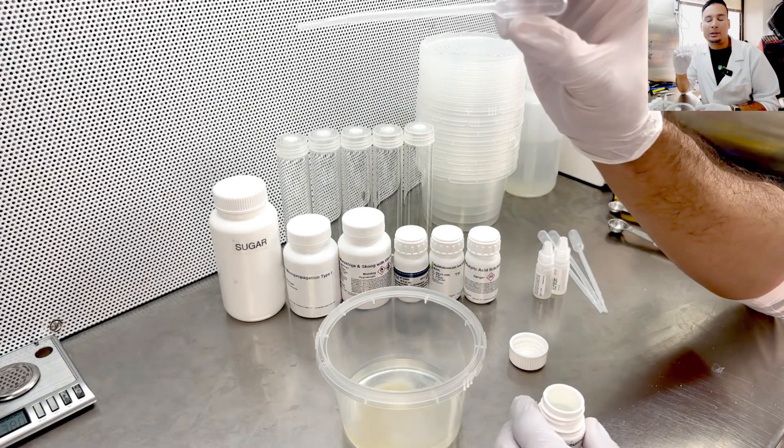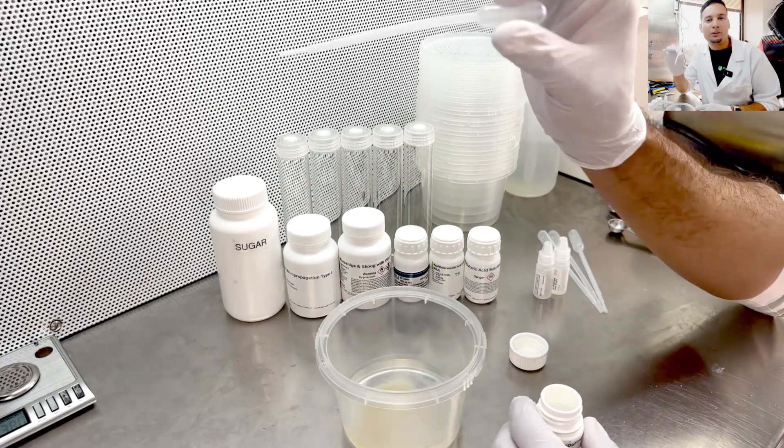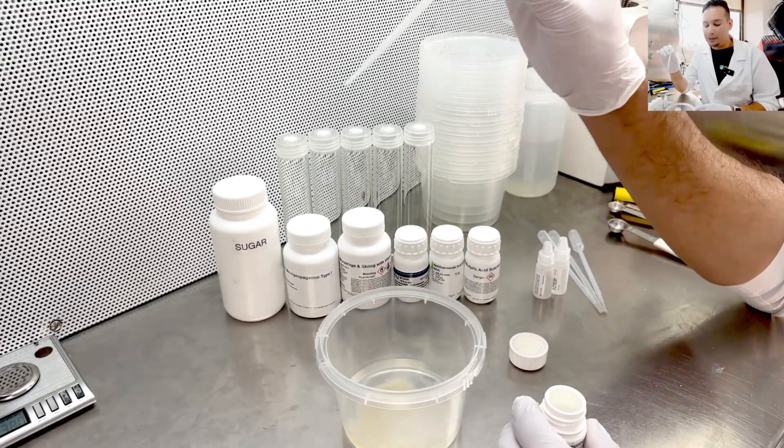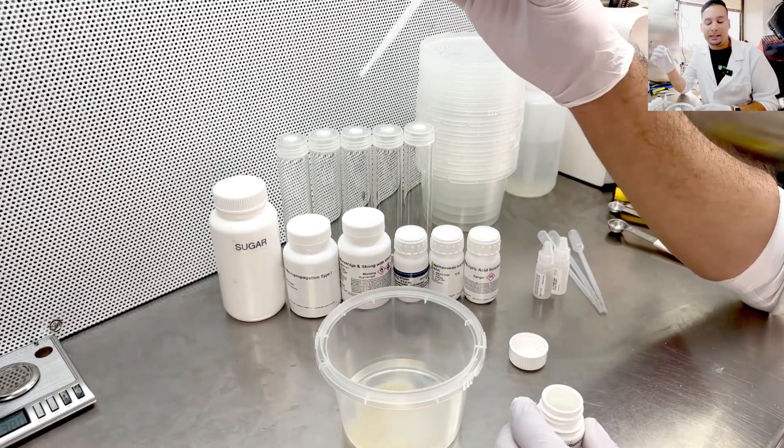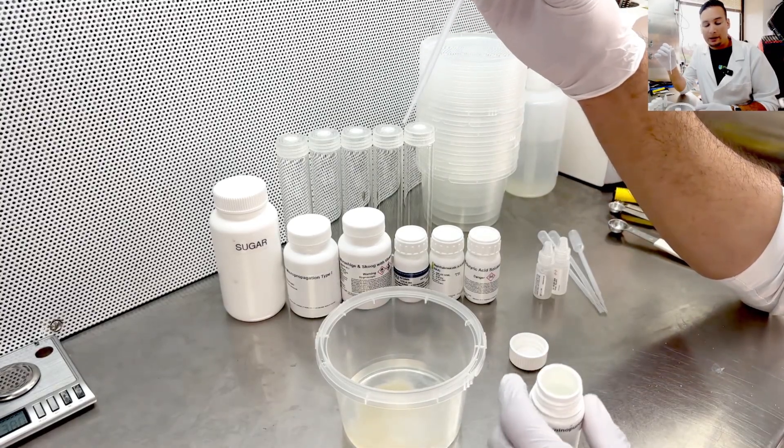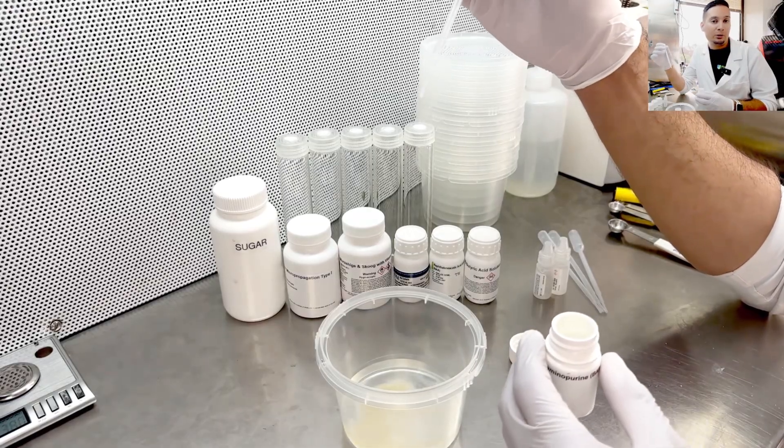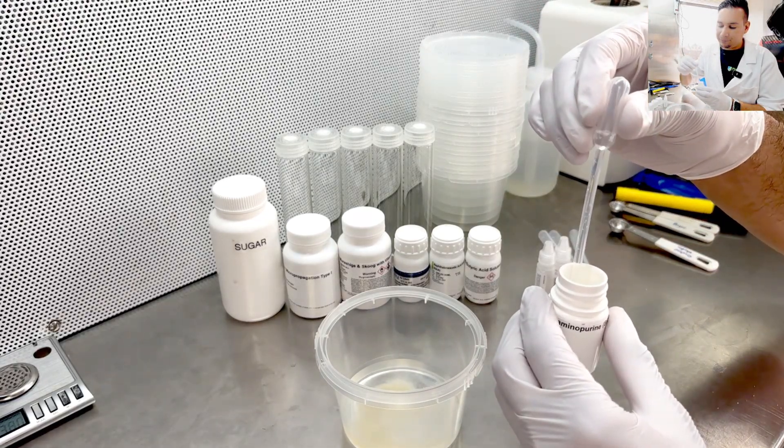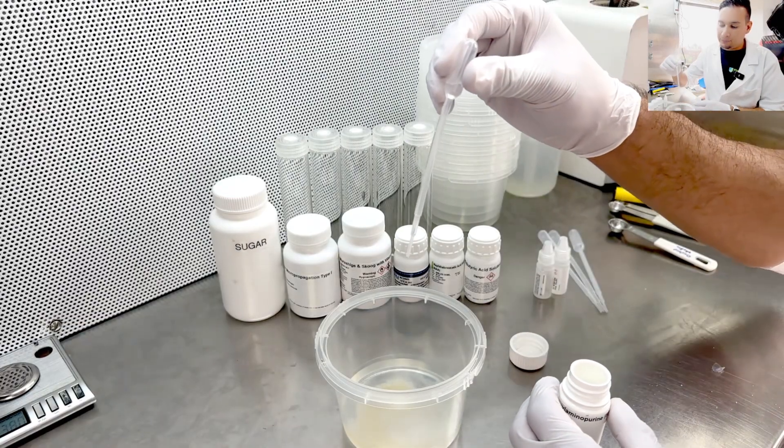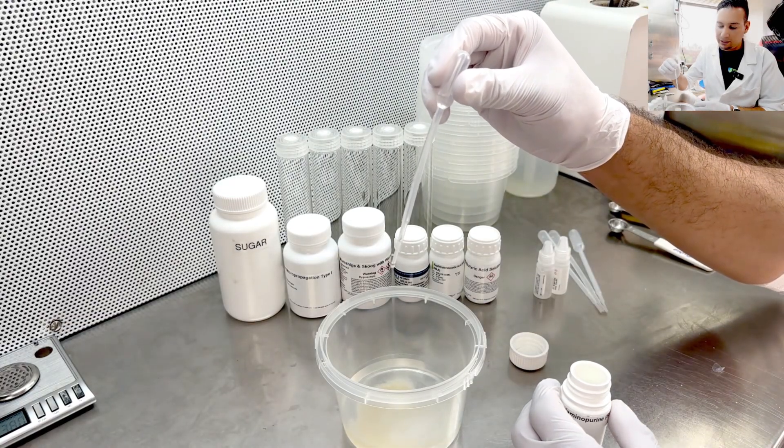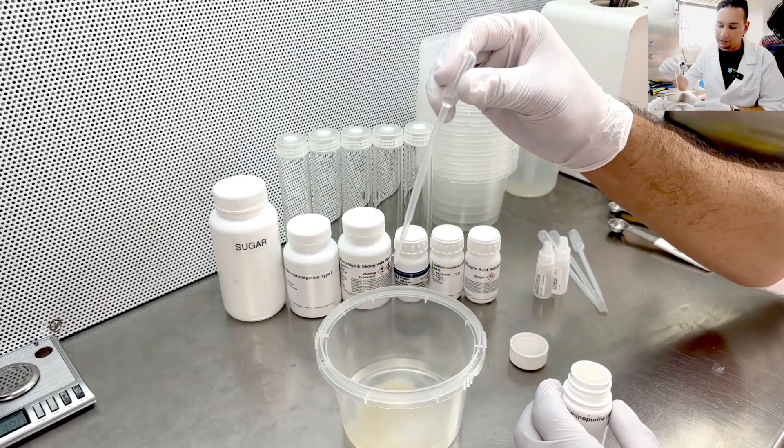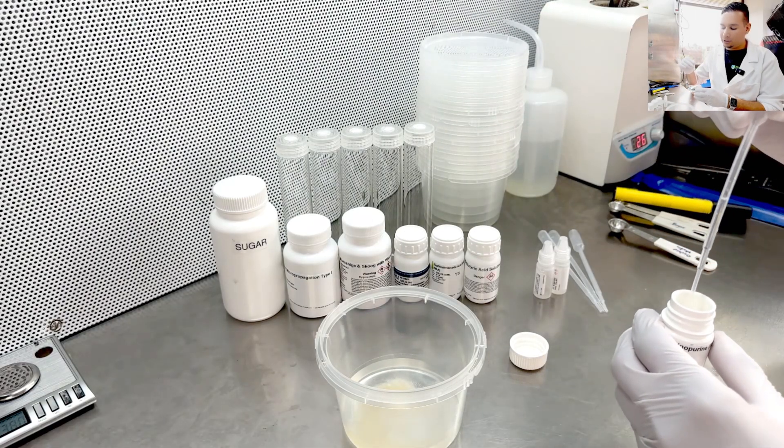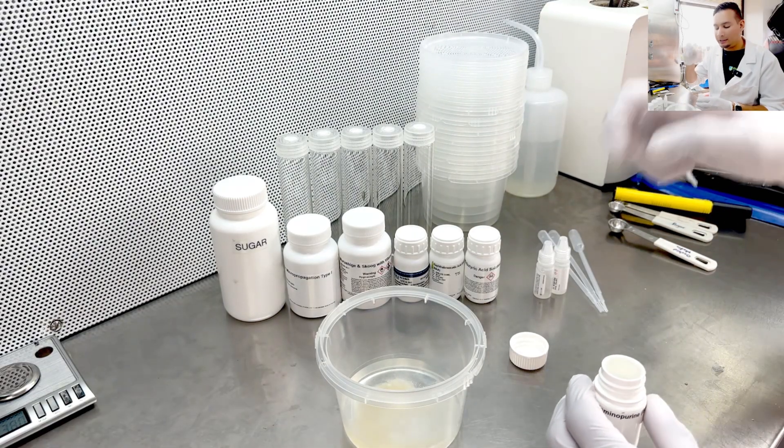20 drops is roughly around one milliliter of media. So if I need two milliliters of BAP, the equivalent of two milliliters of BAP, I want to add four drops. So it goes one, two, three, and four. So I have four drops of BAP using the micropipette.